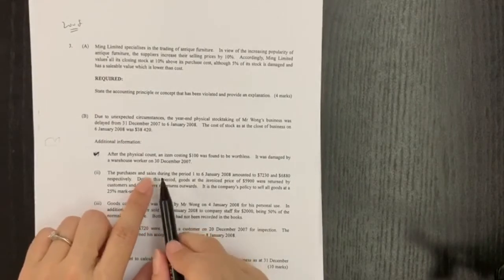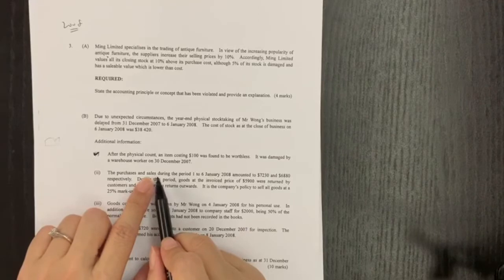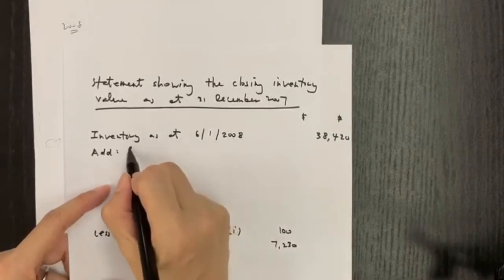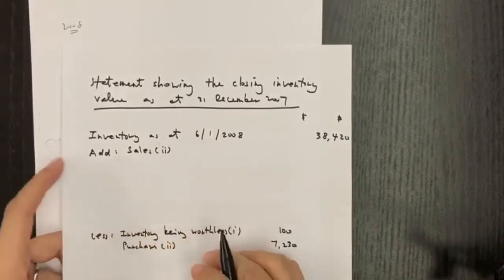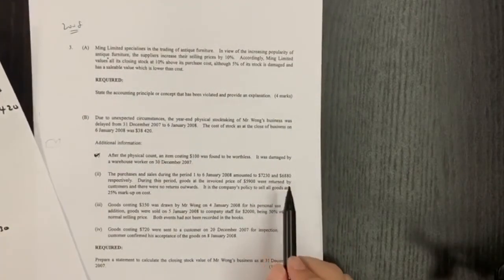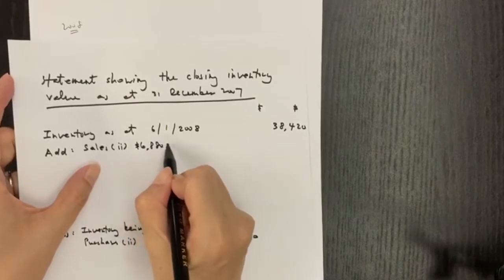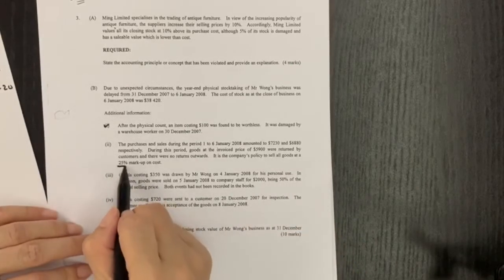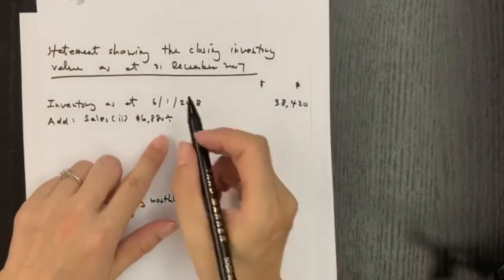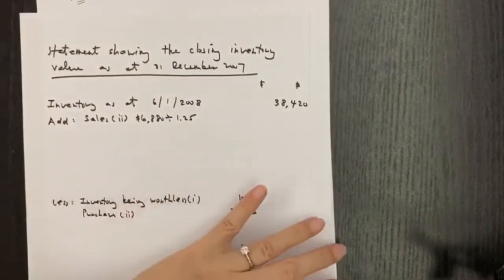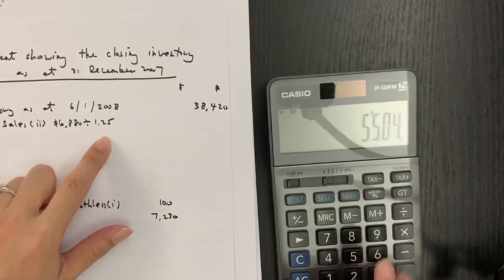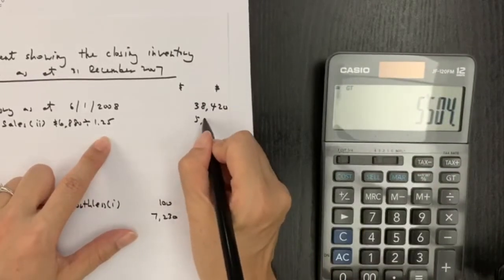Next, for sales: under normal situation, after sales we have less inventory, so we minus sales. But since we are changing the subject to X, we do the opposite — we plus sales, i.e., add sales. Since sales is at selling price, 6,880 needs to be converted back to cost. In this question we are given a markup of 25%, so we divide by 1.25. Using the calculator: 6,880 divided by 1.25 gives us 5,504.